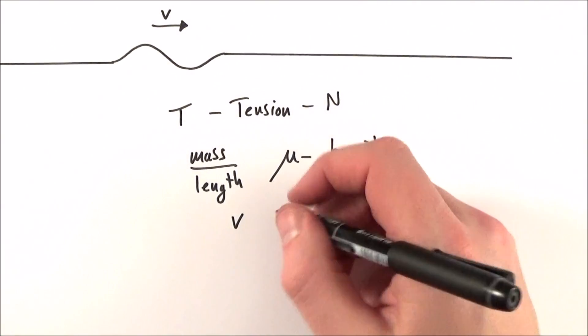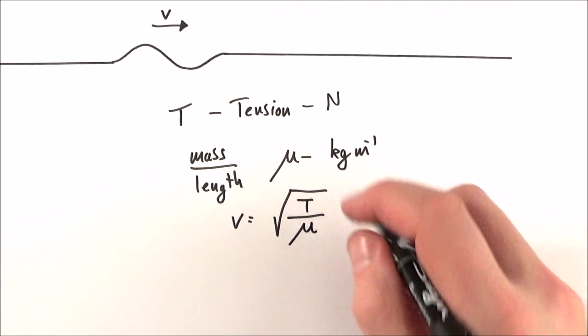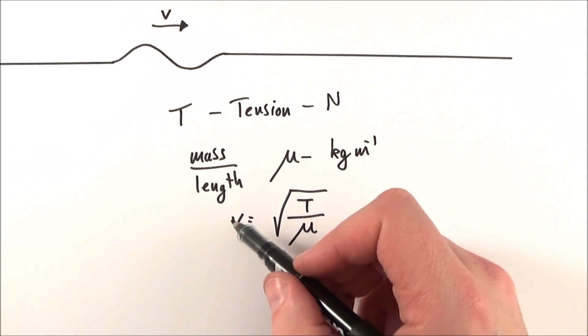What we find is that the velocity is equal to the square root of the tension divided by the mass per unit length. And this tells us how quickly those waves actually travel along that string.